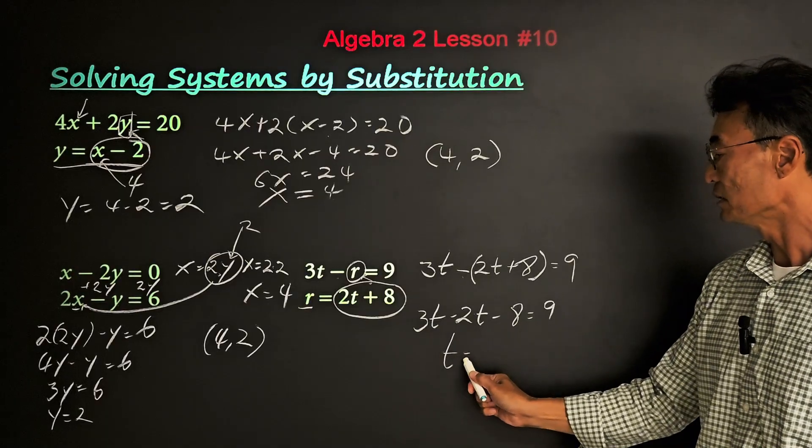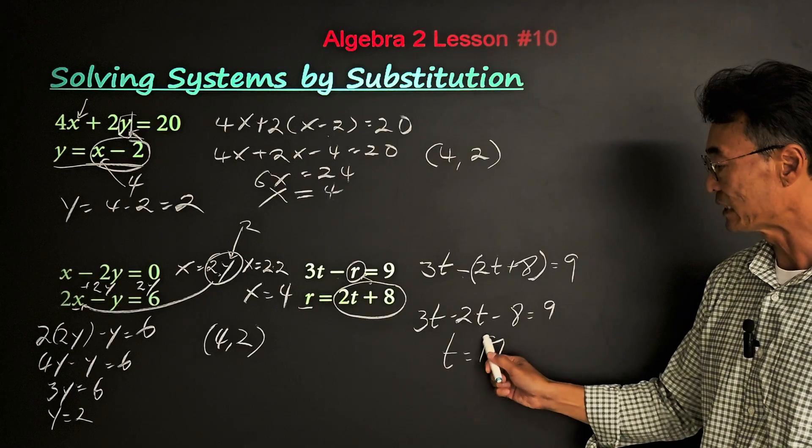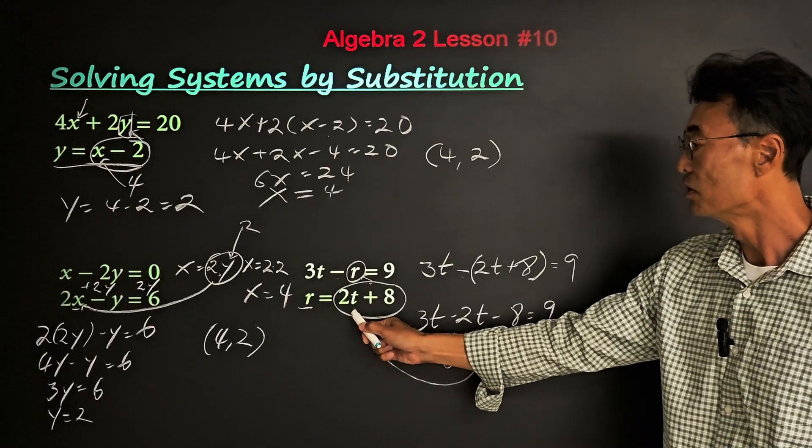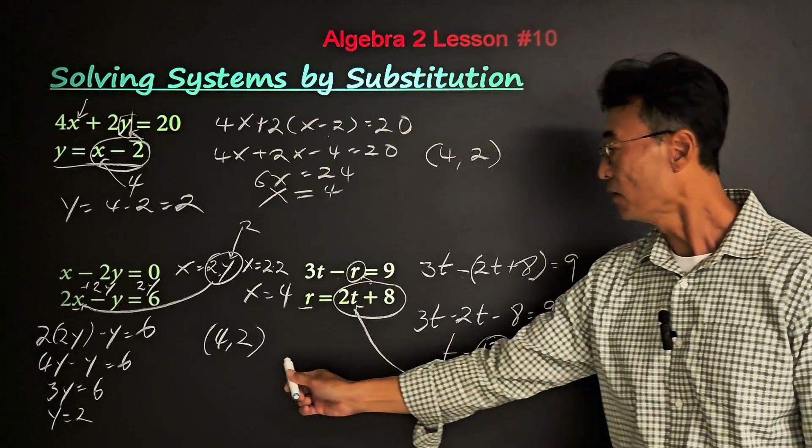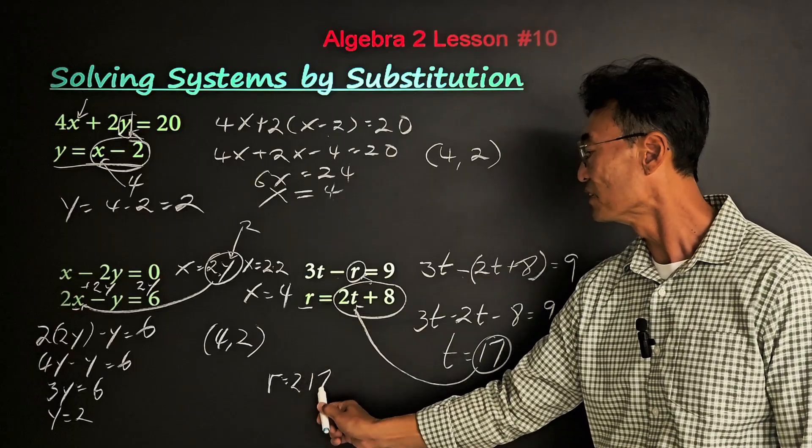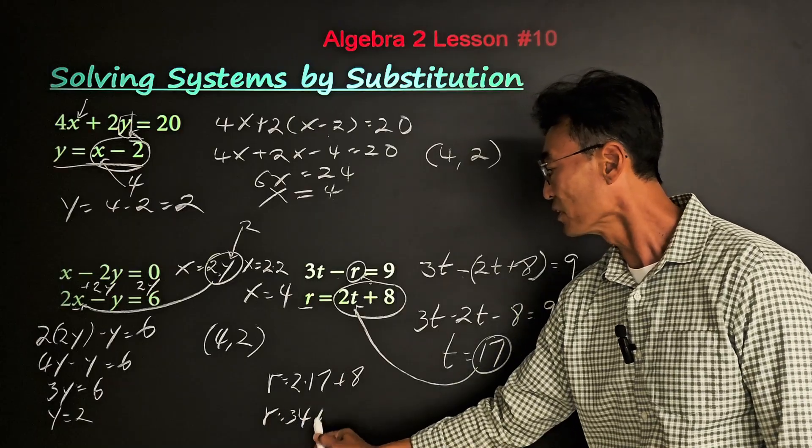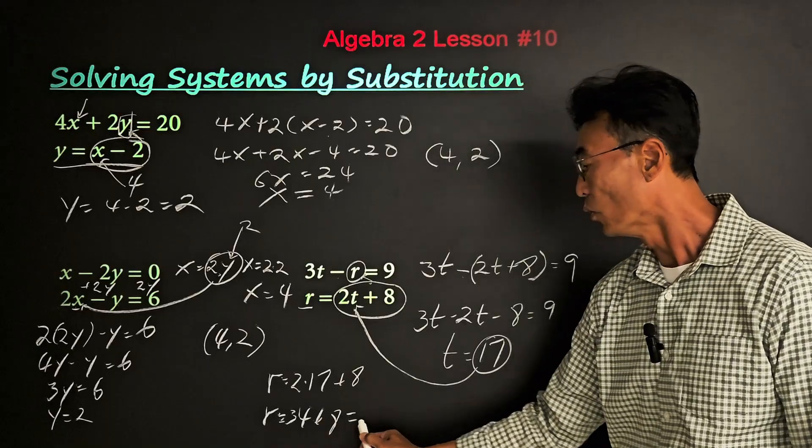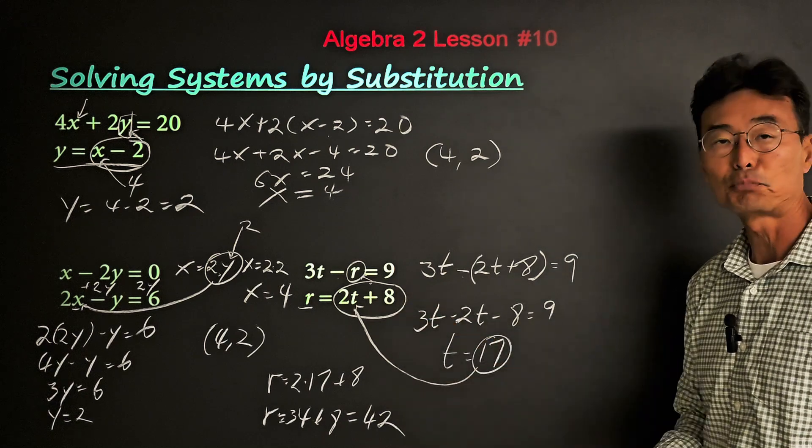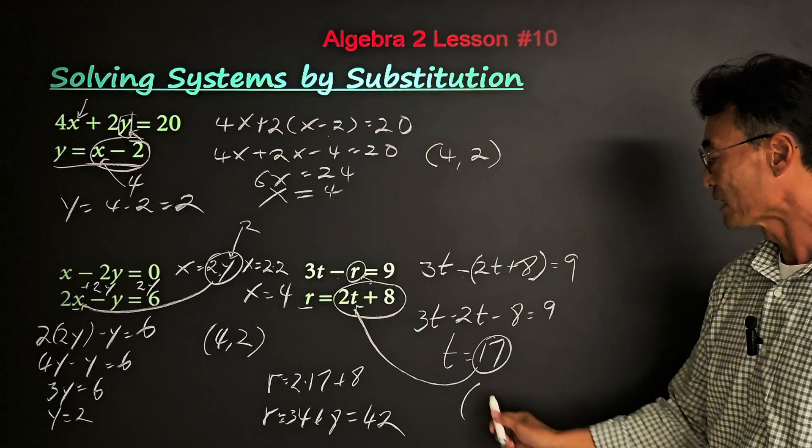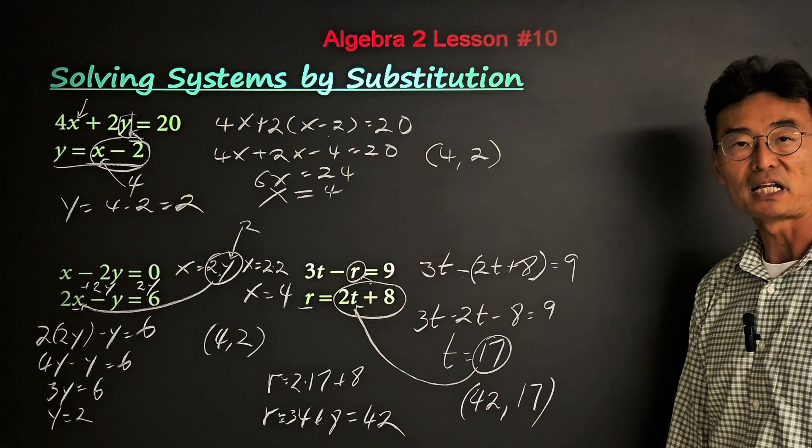Then we have t equals 17. And then to find the value of r, we'll just go ahead and take that 17 and plug it in right there or here. What we get is r equals 2 times 17 plus 8, where r equals 34 plus 8, or simply 42. So then our final answer for this particular question will be r equals 42 and t equals 17.